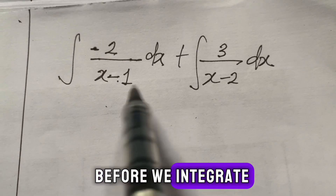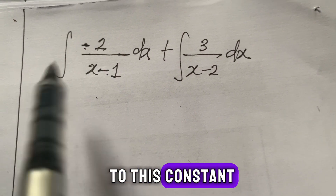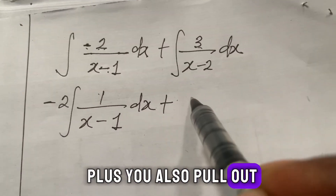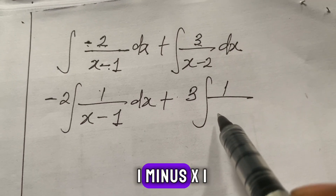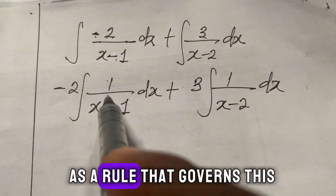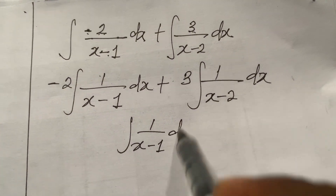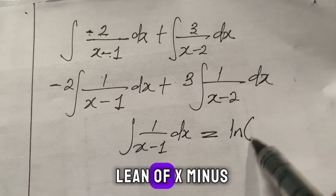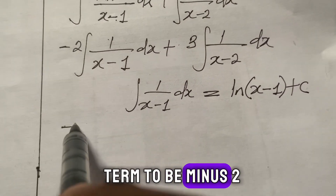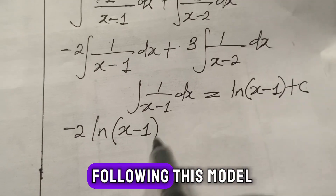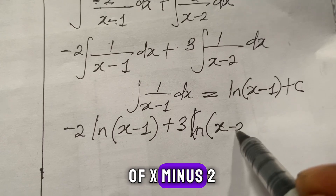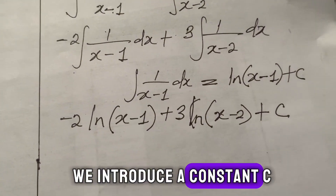There is a rule that governs this: the integral of 1/(x − 1) with respect to x gives ln|x − 1| + C. Applying this rule, we get: −2 ln|x − 1| + 3 ln|x − 2| + C.